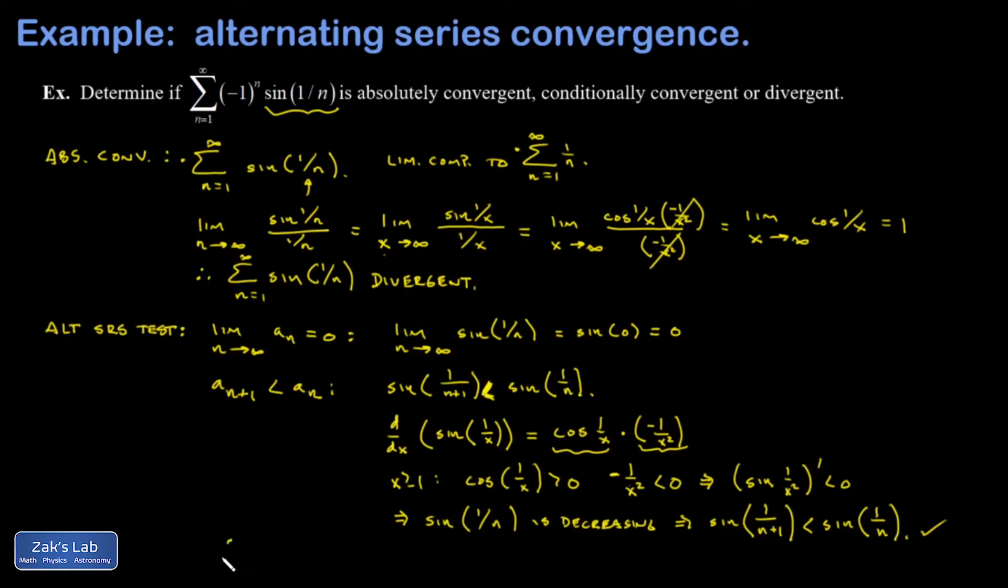And we conclude that the alternating series converges. Now, because its series of absolute values did not converge, we say that our original alternating series is conditionally convergent.